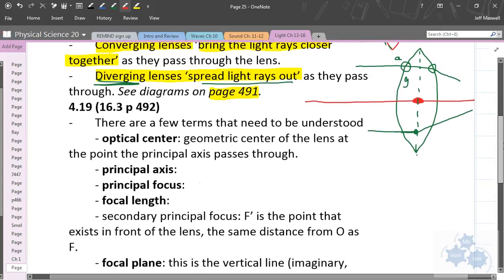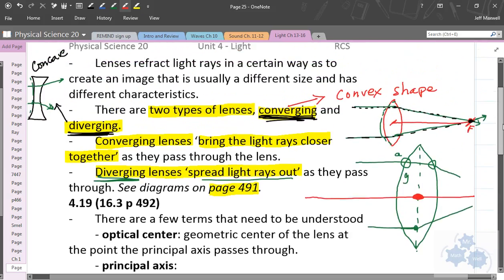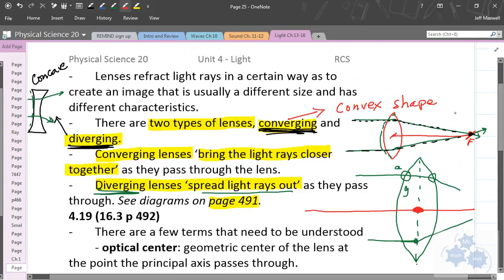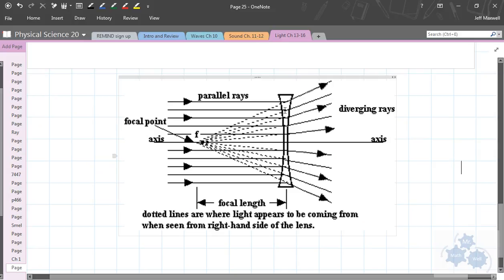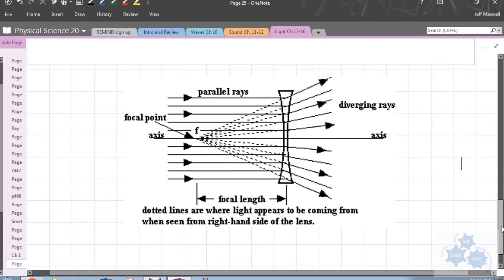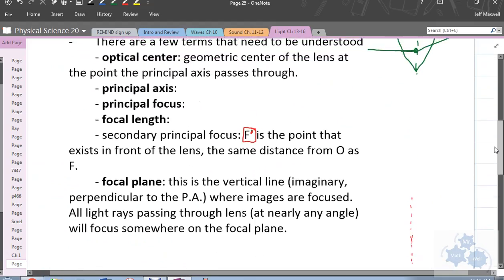Now there is a secondary principal focus, and that is denoted with F prime here. It's a little kind of a tick mark there. F prime. It's the point that exists in front of the lens. And we're talking mainly about concave mirrors here. So let me just get you a diagram for that. So in this diagram of a diverging lens, you can kind of see that the light rays travel through the lens and they diverge away. But where they would converge would be on the front side of the lens. And here's F, the focal point there for a diverging lens.